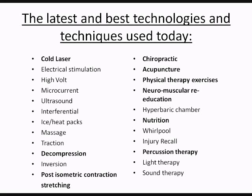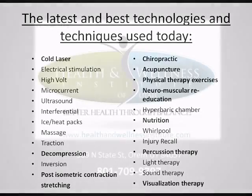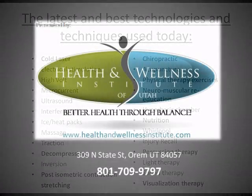Some of them are bolded — these are the therapies we like to use in our office because we get better results with them, but all these therapies are great cutting-edge technology and work very well. As you can see: cold laser, decompression, post-isometric contraction, chiropractic acupuncture, physical therapy exercises, neuromuscular education, nutrition, and percussion therapy are some of the things we focus on in our office. We also use massage and traction, light and sound therapy, electrical stimulation, and visualization.